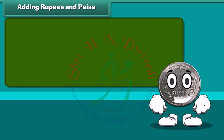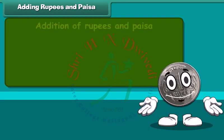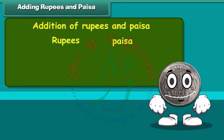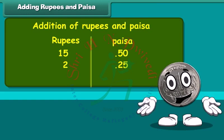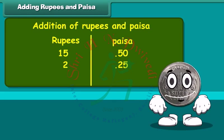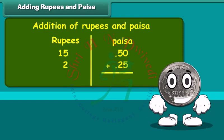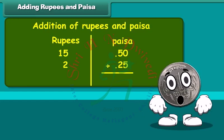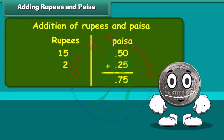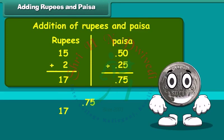Adding rupees and paisa: let us learn addition of rupees and paisa. Add 15 rupees 50 paisa and 2 rupees 25 paisa. Write the amount in two separate columns of rupees and paisa. First, add numbers in the paisa column: 50 plus 25 paisa is equal to 75 paisa. Now add numbers in the rupees column: 15 plus 2 is 17. Therefore, the sum is 17 rupees and 75 paisa.